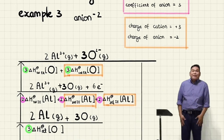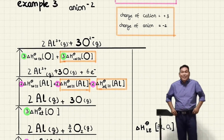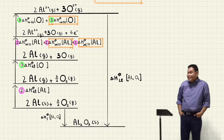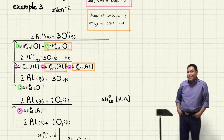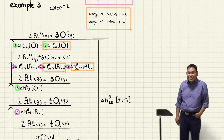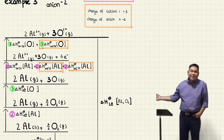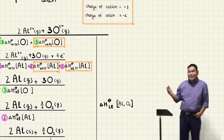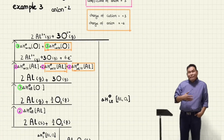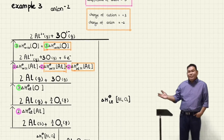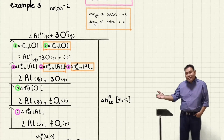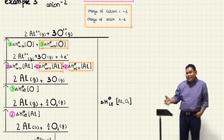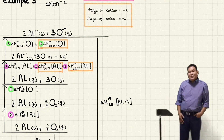That's the end of our video. Hopefully you can understand this — the Born-Haber Cycle is not difficult, you can do this. I think my video is quite clear and you can understand it.